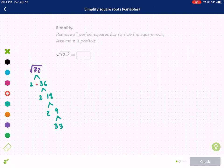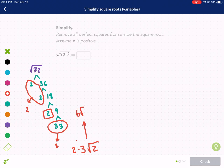Now I'm going to circle any time I have a pair. So I have a pair of 2s, a pair of 3s, and the 2 is home alone. So I can rewrite this. The 2 comes out. The 3 comes out, so I multiply it, and the 2 stays home. So I know that this is 6 radical 2.